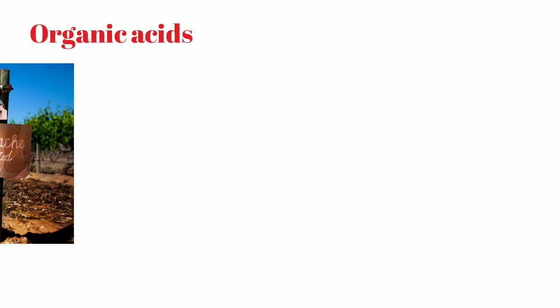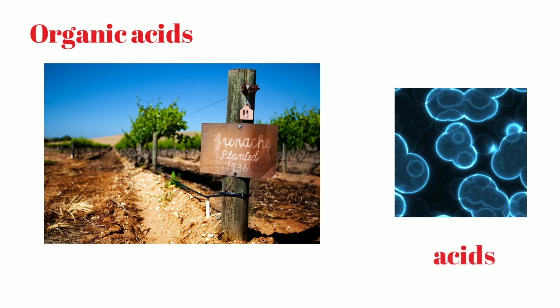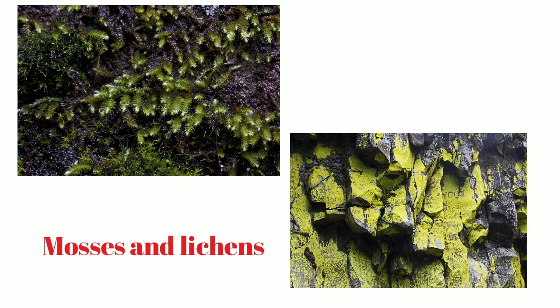Now let's look at weathering caused by organic acids. Rocks rest on soil, and bacteria in the soil produce many acids which act on the rocks. There are many microorganisms and plants such as mosses and lichens on rocks, which absorb chemical elements from the rocks as food and produce organic acids. These cause both chemical and mechanical weathering, breaking down the rocks.